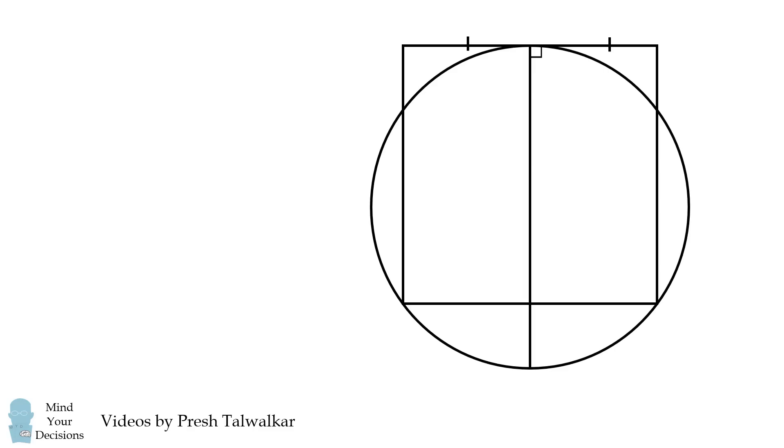It also bisects the bottom side of the square. So if this length is equal to y, this length will also be equal to y, and the entire side of the square will be equal to 2y. If we write r for the radius of the circle, then 2r is the diameter of the circle, and the remaining distance on the diameter is equal to 2r minus 2y.